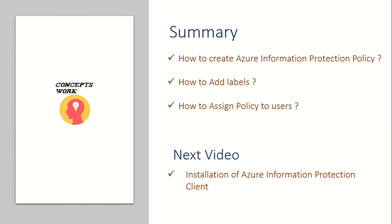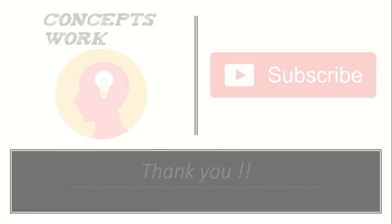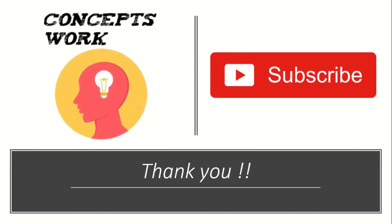To summarize, we've discussed how to create an Azure Information Protection policy, how to add labels, and how to scope labels to different sets of users. In the next video we'll proceed with the installation of the AIP client and see what difference a user experiences when scoped to different policies. If you've learned something new, please feel free to subscribe. Thank you so much for your time.